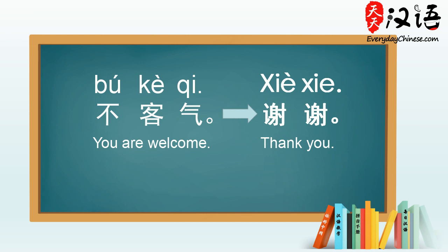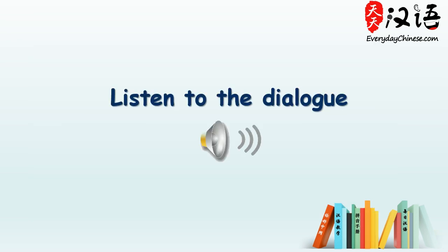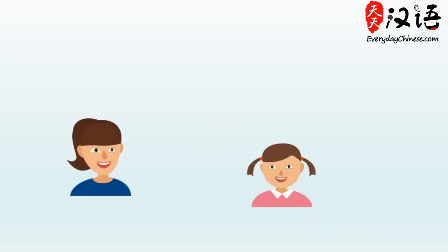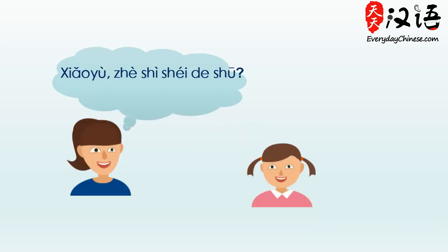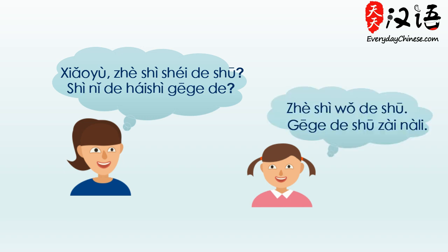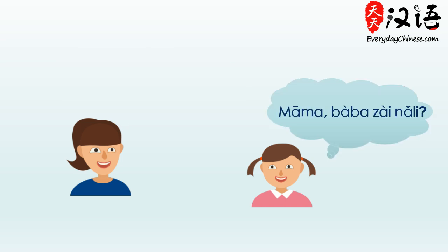Now let's listen to the second dialogue. 小玉,这是谁的书？是你的还是哥哥的？这是我的书。哥哥的书在那里。妈妈,爸爸在哪里？他在公司. This is a conversation between 小玉 and her mom.